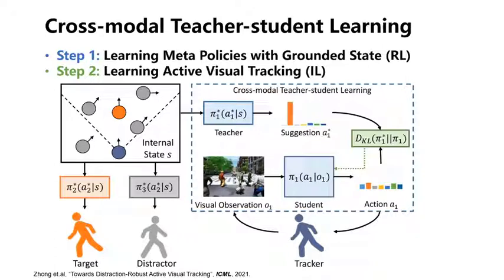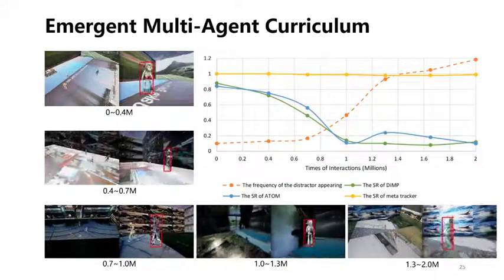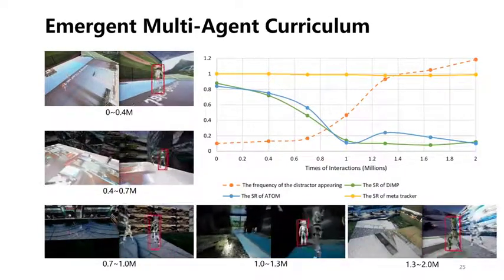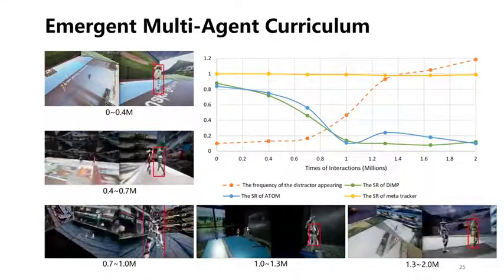Through this game-based learning, various distracting behaviors naturally emerge in different learning phases. The meta-policies are of different difficulty levels, constructing a multi-agent curriculum for student learning. We can see that the frequency of distractor appearance increases during learning.